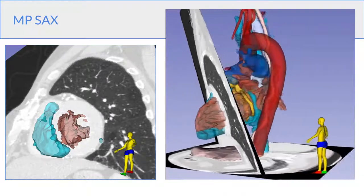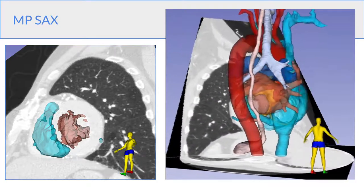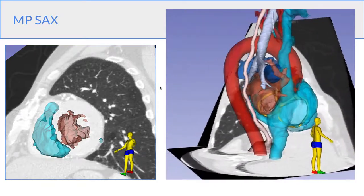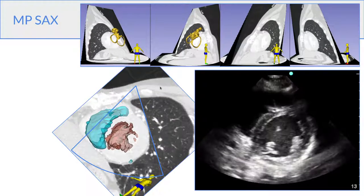So here we have the cut plane now with all the structures showing and on the left oriented to correspond to the standard TTE views. So here on the right is the standard parasternal short axis view and on the left the corresponding CT tomographic view.